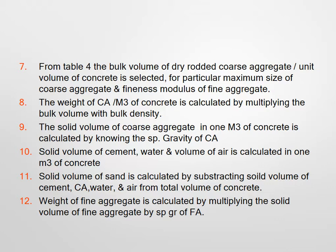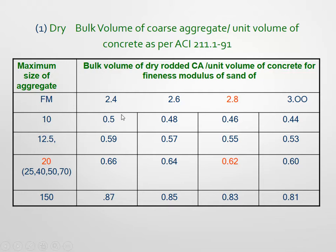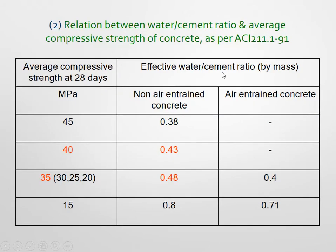The weight of fine aggregate is calculated by multiplying the solid volume of fine aggregate by its specific gravity. These are the steps to be followed in the ACI mix design. Table 1 gives the dry rodded bulk volume of coarse aggregate per unit volume of concrete as per ACI. It lists maximum aggregate sizes of 10, 12.5, 20, and 40 mm against fineness modulus values of 2.4, 2.6, 2.8, and 3.0. For example, for 20 mm aggregate and fineness modulus 2.4, the dry bulk volume is 0.50.